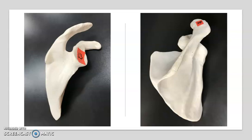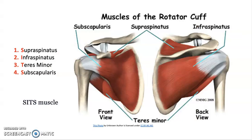Rotator muscles originate from three fossae of the scapula: the subscapular fossa, supraspinous fossa, and infraspinous fossa. The rotator cuff is a common name for the group of four distinct muscles and their tendons. Tendons of these muscles come together to form a covering around the head of the humerus and top of the shoulder. The rotator cuff provides strength and stability during motion to the shoulder complex.